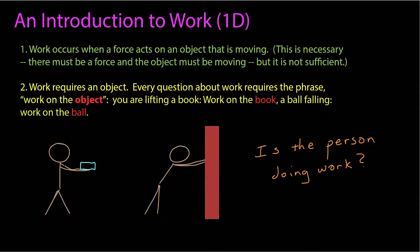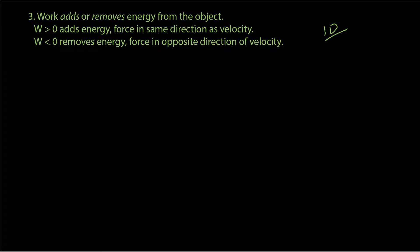So always be careful when you're dealing with work, and make sure you know and can identify the object that the work is being done on. Work adds or removes energy from the object. If the work is positive, greater than zero, then it's adding energy, and that corresponds to when the force is in the same direction as the velocity. If the work is negative, that means it removes energy, and that corresponds to the force being in the opposite direction of the velocity.